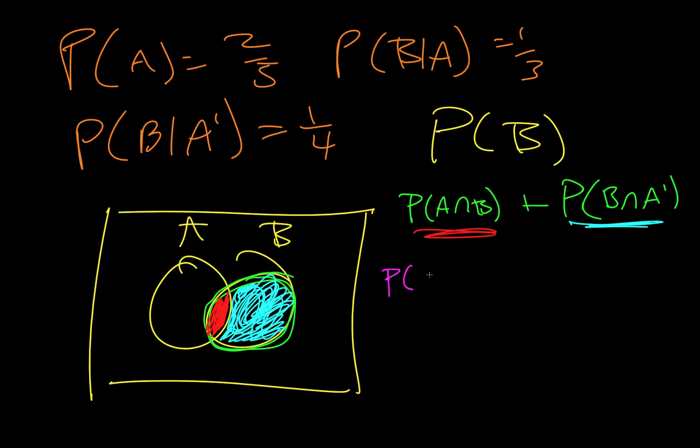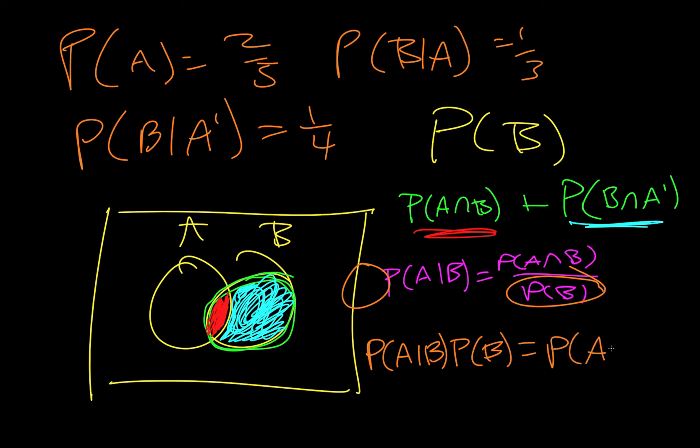So from the previous video, P of A given B equals P of A intersect B over P of B. We're going to do just a little bit of algebra to bring this up here, and so we end up with P of A given B times P of B equals P of A intersect B. So this is what we're going to use for this part.